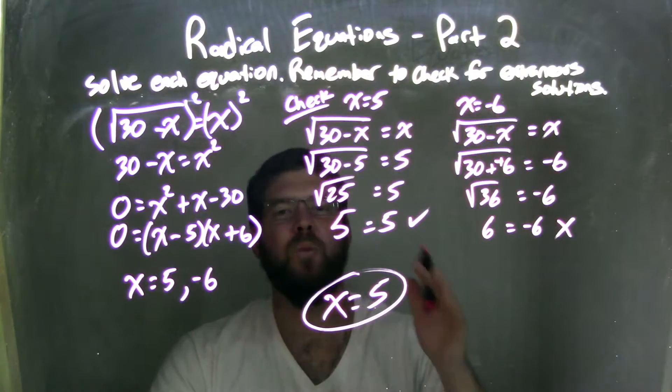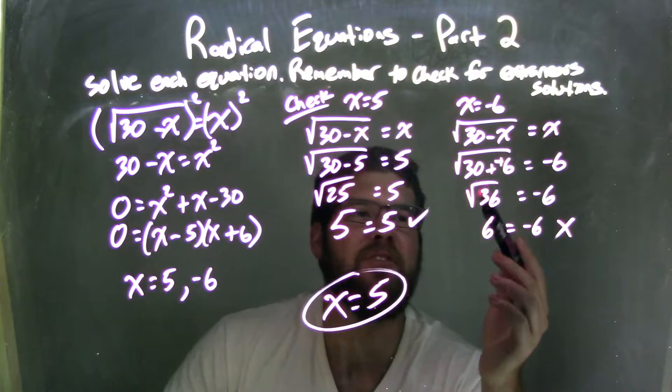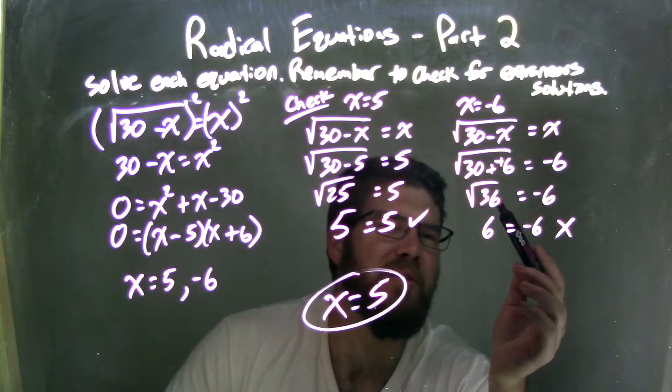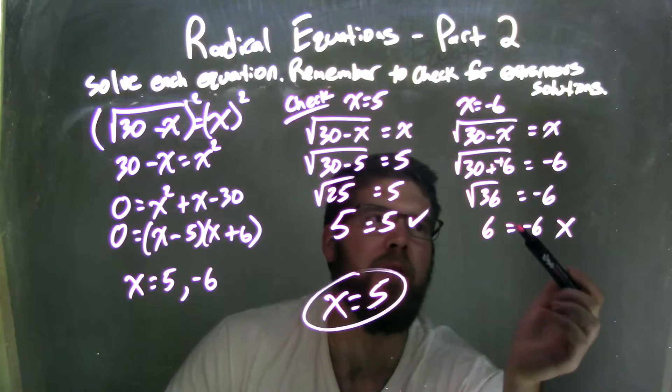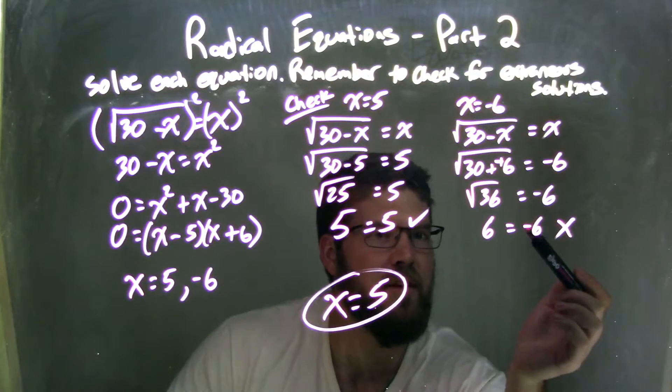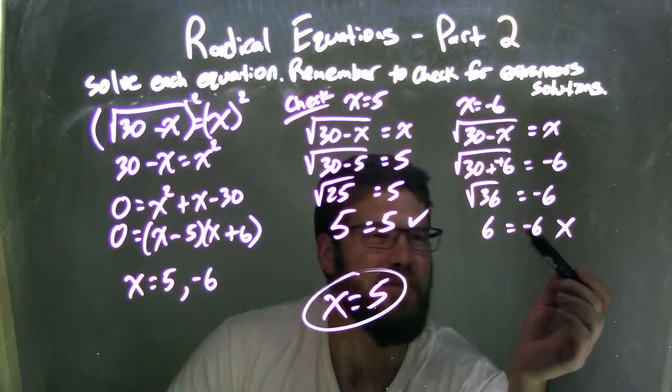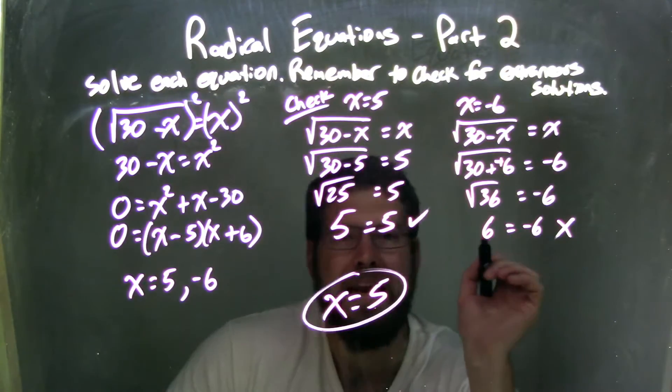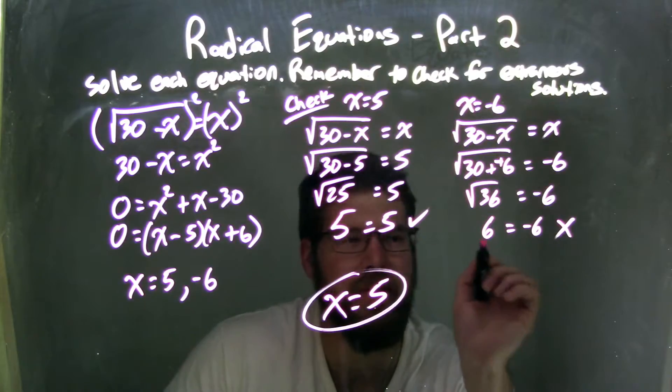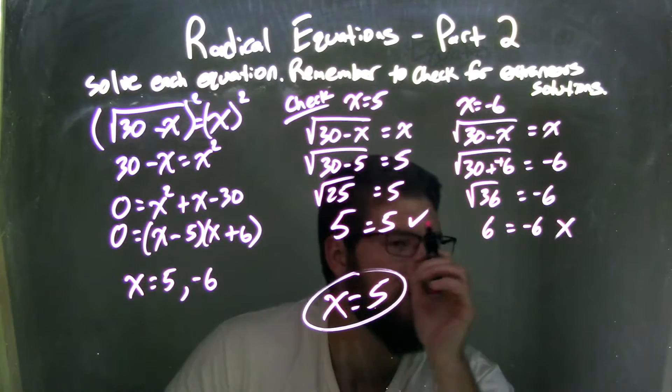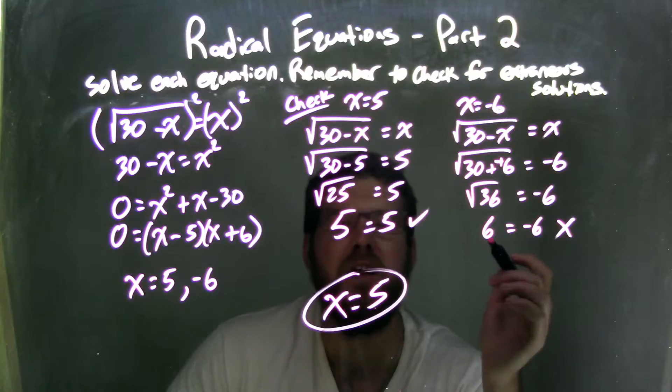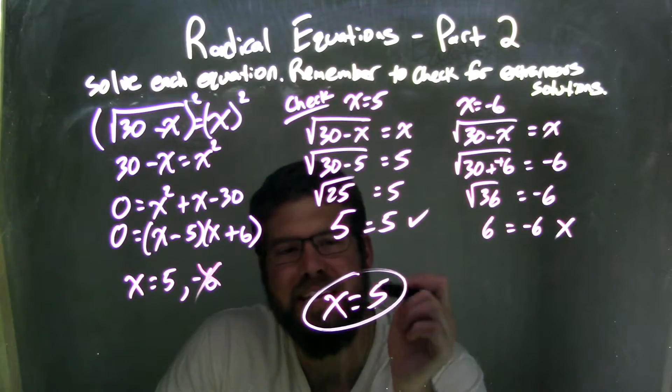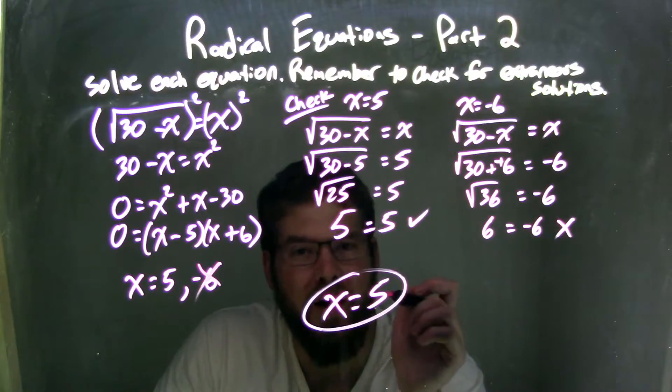Other one, x equals negative 6. Well when I plug that in, I've got the square root of 36. When I simplify this, the square root of 36 is positive 6, but on the right-hand side I had a negative 6. So 6 equals negative 6? Not true. That does not happen. Not a true answer. So that is what we call an extraneous solution. And so since that's extraneous, it's not a real solution. So therefore, cross it off there, and our only true solution here is x equals 5.